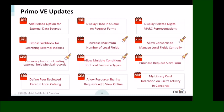More in August and September releases: users can now submit a resource sharing request even if the item is available electronically — there is an option to request the physical item and borrow it from other libraries. In September, we are adding an activity indicator for consortia so users can see which institution has activity for them in My Library Card.